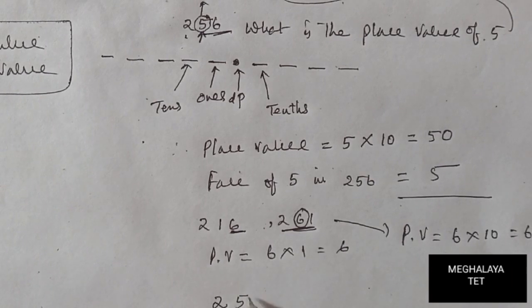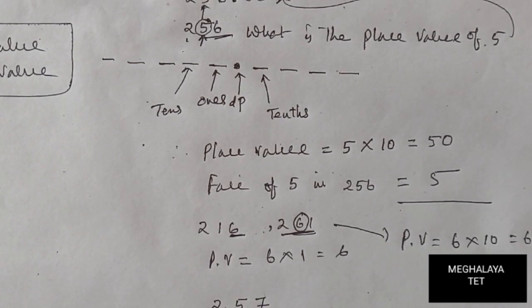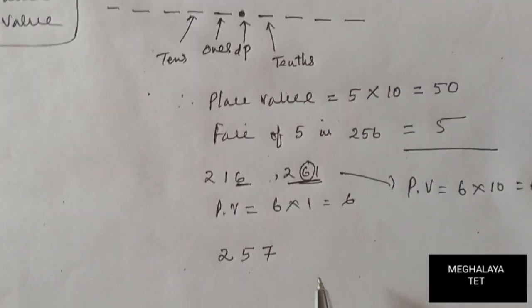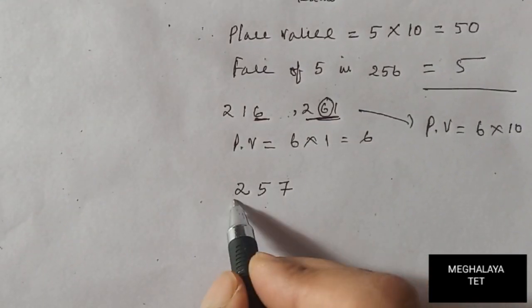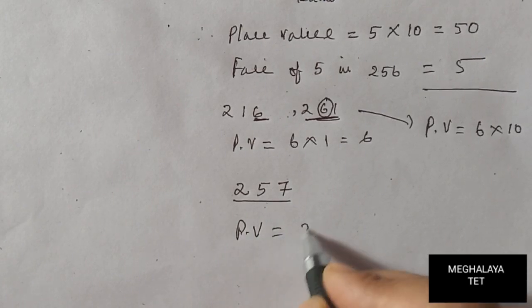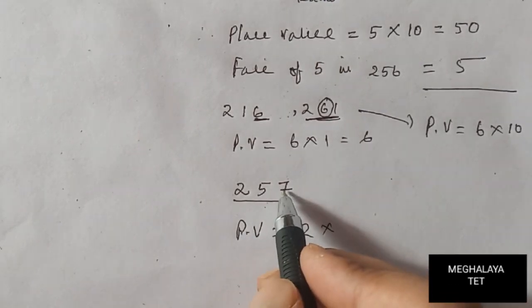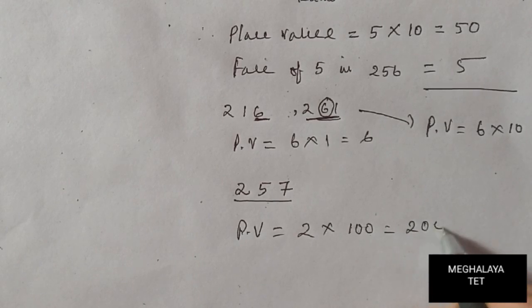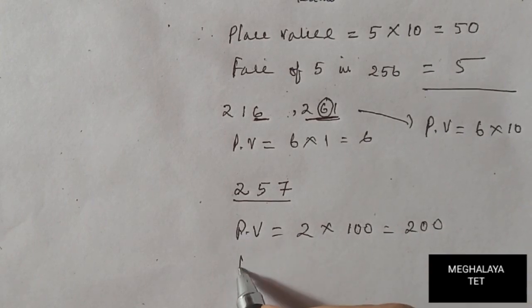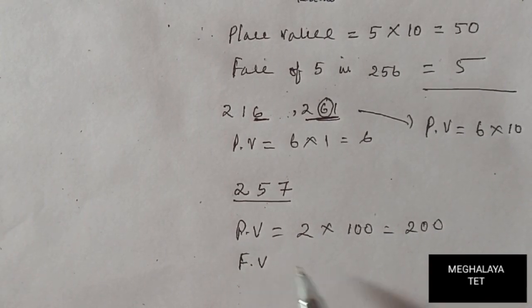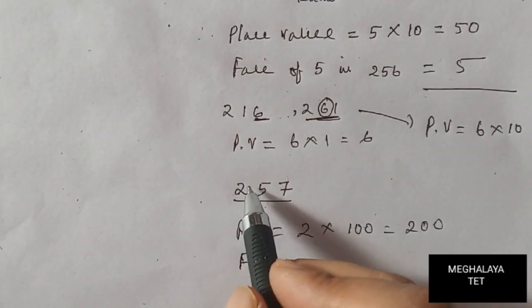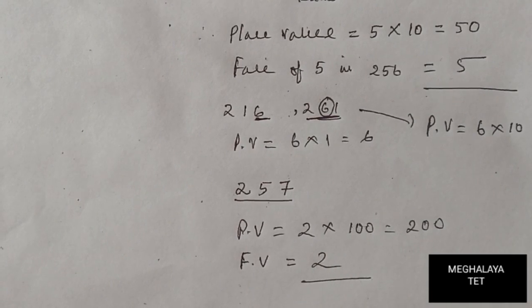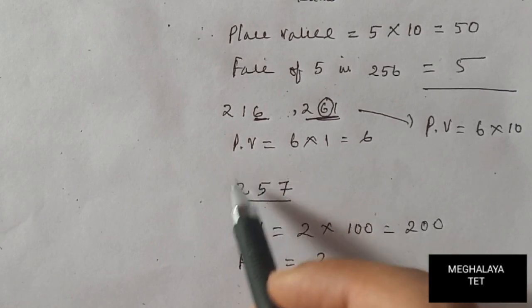Suppose the number is 257. What is the place value of 2? We count: ones, tens, hundreds — 2 is in the hundreds place. So PV = 2 × 100 = 200. The place value of 2 in 257 is 200. And the face value of 2 in 257 is simply 2 — just the number itself.